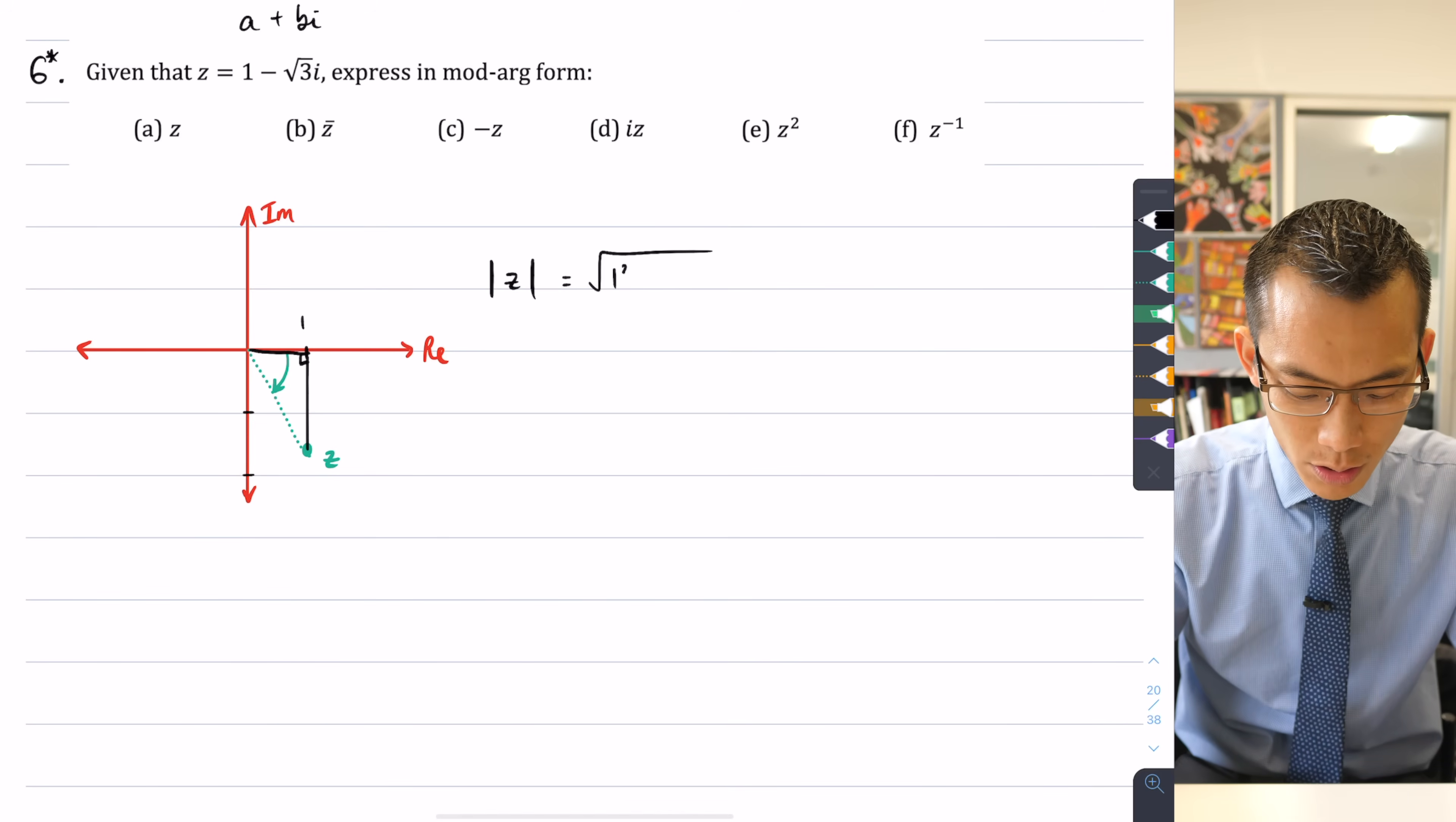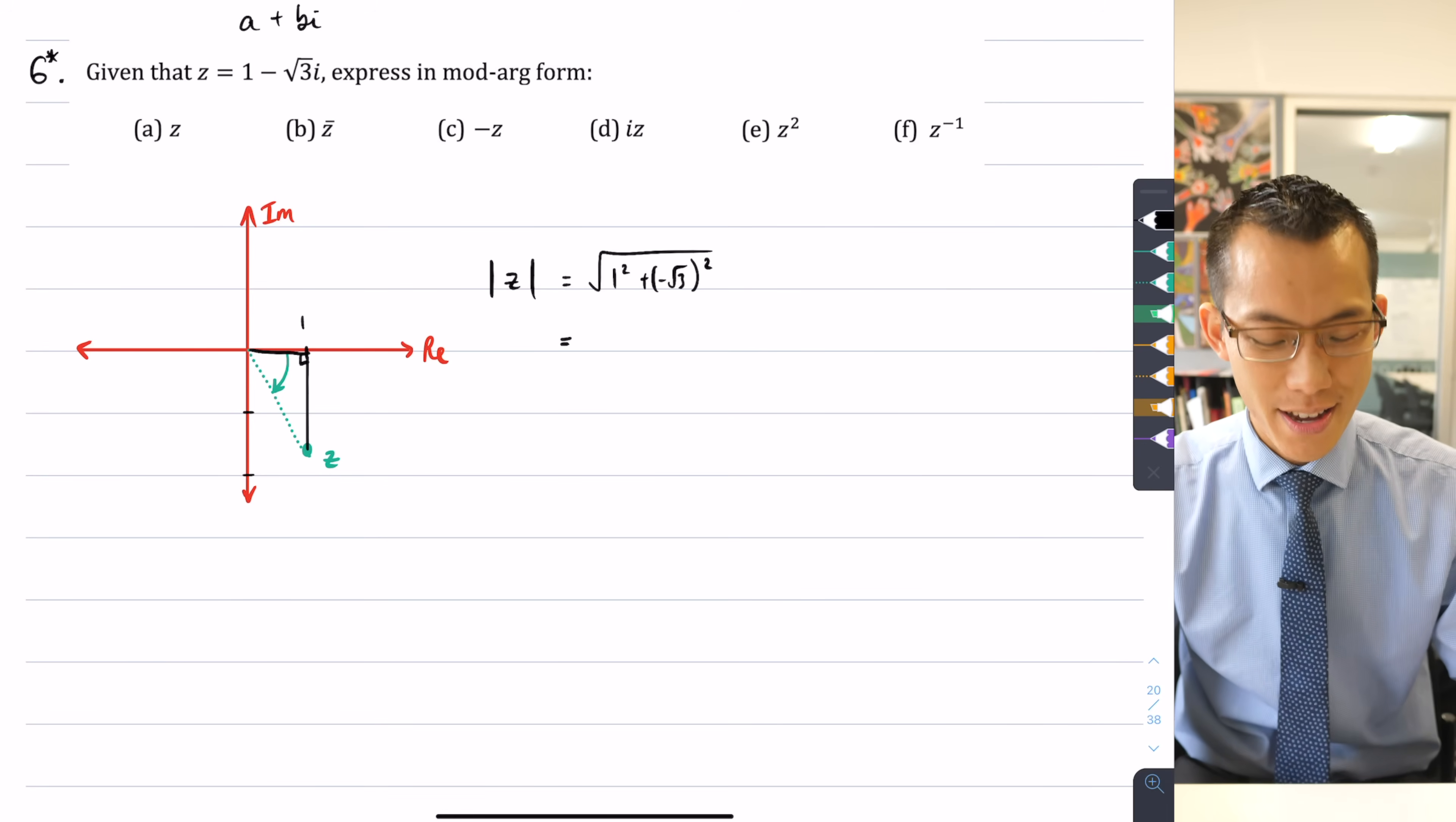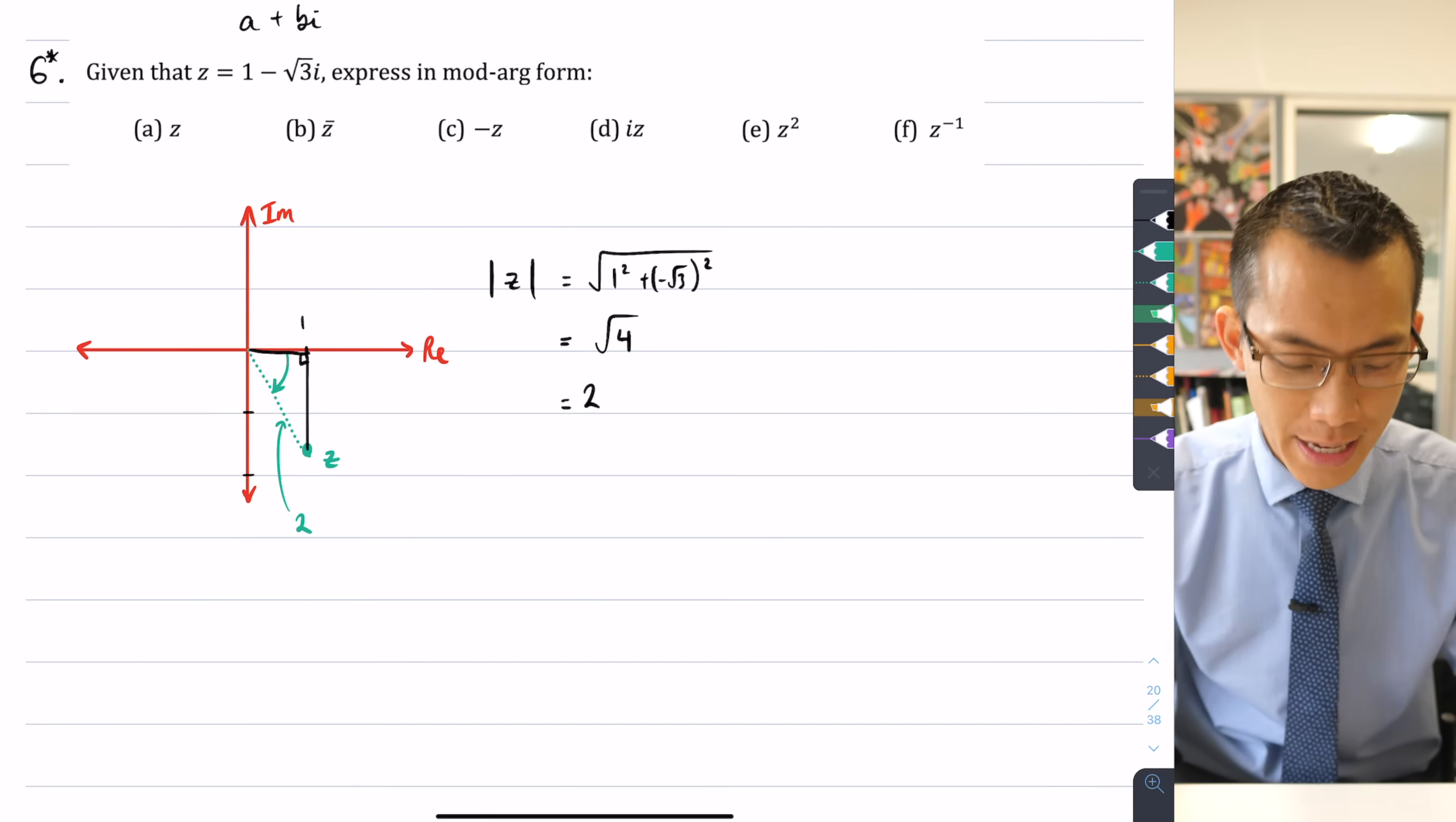I just want 1² + (-√3)². That's just a and b. You can see, of course, you're going to get one out of one squared and three out of negative root three squared. So therefore, you're just getting the square root of four, which of course is two. So that tells us that this distance in here is two. So there's our modulus of z. There's the first half.